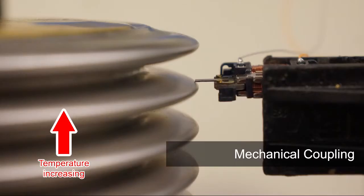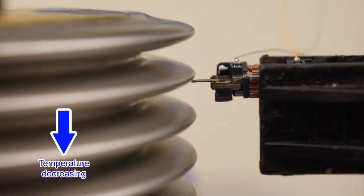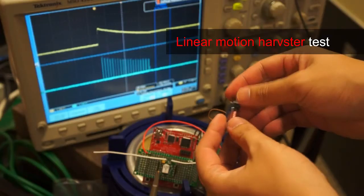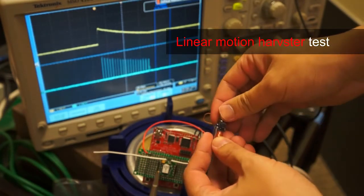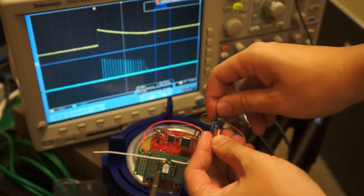By mechanically coupling linear motion harvesters with the bellow, we show the capability of harvesting up to 21 millijoules of energy in one period of temperature waving within 5 Celsius to 25 Celsius range.